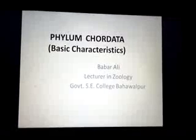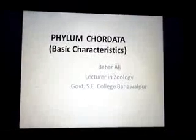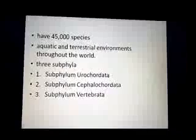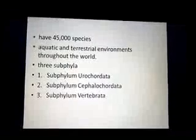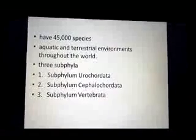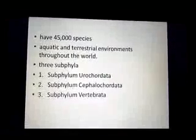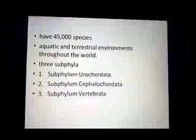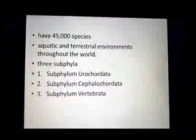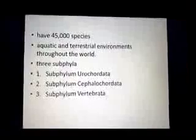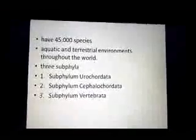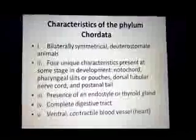In this lecture we discuss about the basic characteristics of Phylum Chordata. There are nearly 45,000 species of this phylum identified, and these animals live in all types of environments — aquatic and terrestrial — throughout the world. Phylum Chordata is divided into three sub-phyla: Sub-phylum Urochordata, Sub-phylum Cephalochordata, and Sub-phylum Vertebrata.